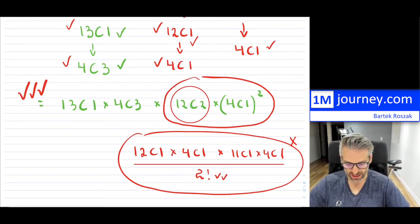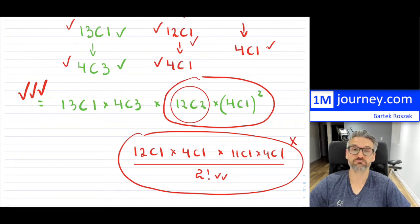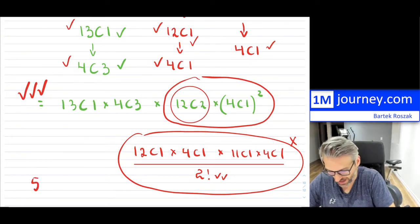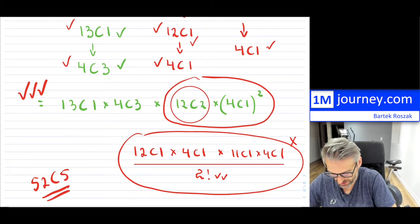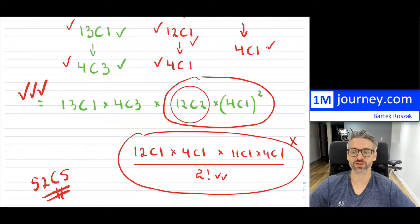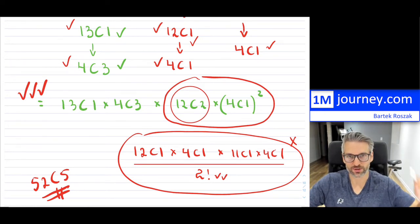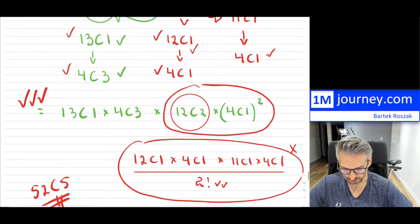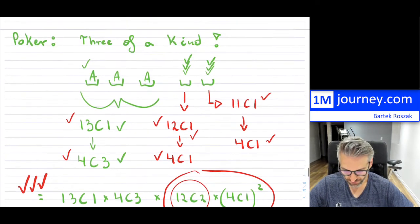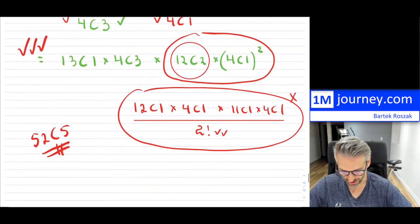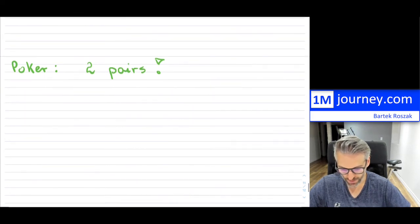To find the probability, take the total combinations for three of a kind and divide by 52 choose 5, since that's the total number of five-card combinations from a 52-card deck. So that's how you do three of a kind. And now, two pairs.